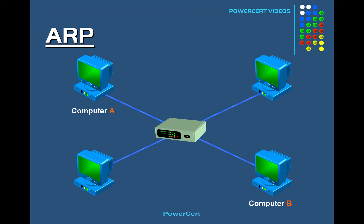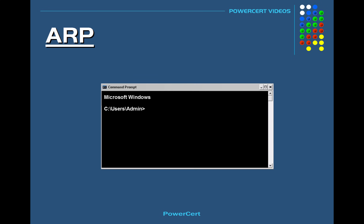In order to find the MAC address, computer A will first look at its internal list called an ARP cache, to see if computer B's IP address already has a matching MAC address. We can check this ourselves at a Windows command prompt using the ARP utility by typing 'arp -a'. As you can see in the output, it has no entries at all — the ARP cache is empty.